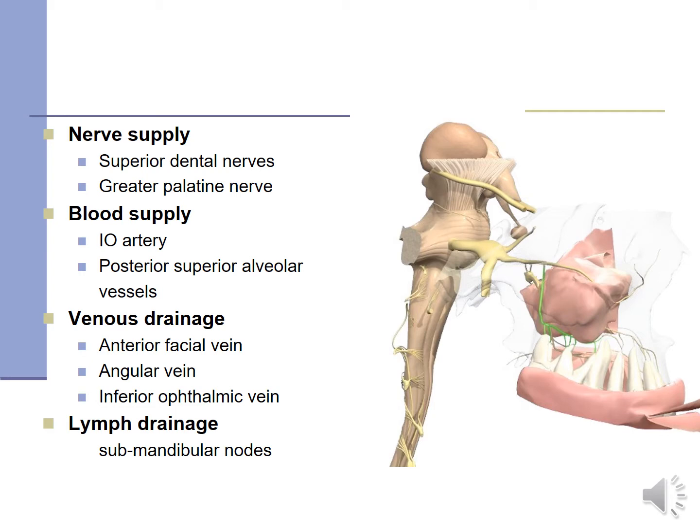When talking about anatomy, you should know about the nerve supply, blood supply, venous drainage, and lymphatic drainage. The nerve supply is through the superior dental nerve and the greater palatine nerve. The blood supply is through the infraorbital artery and posterior superior alveolar vessels. The venous drainage is through the anterior facial vein, angular vein, and inferior ophthalmic vein. The maxillary sinus drains into the submandibular nodes.